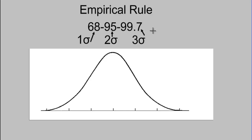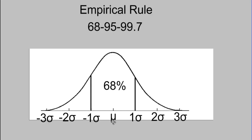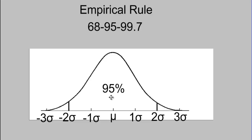Let's take a look at what this looks like on our normal curve. With mu being the center of our distribution, one standard deviation to the left and one to the right contains 68% of the population. Between two standard deviations from the mean — two to the left and two to the right — 95% of the population live. And finally, 99.7% of the population are within three standard deviations to the left and three to the right of the mean.